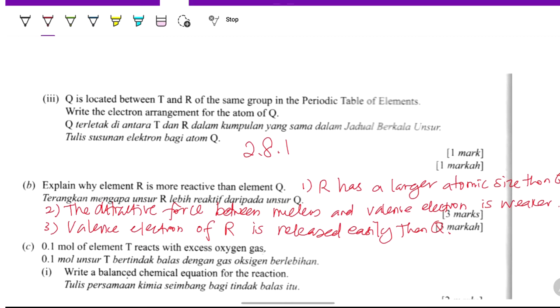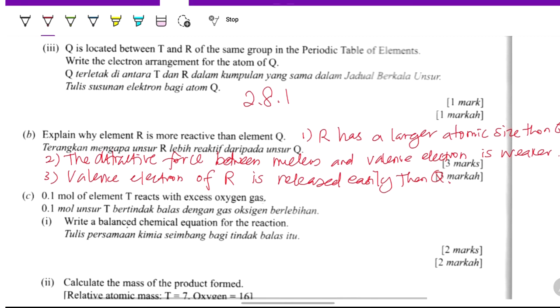So 3 marks. Normally, you will need to explain point by point.